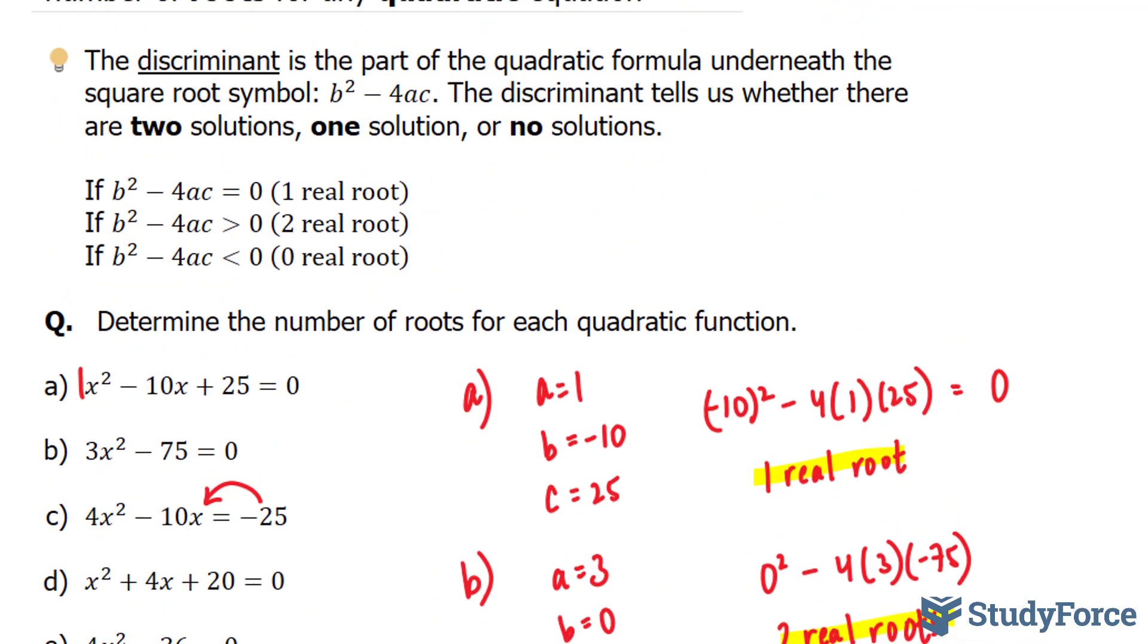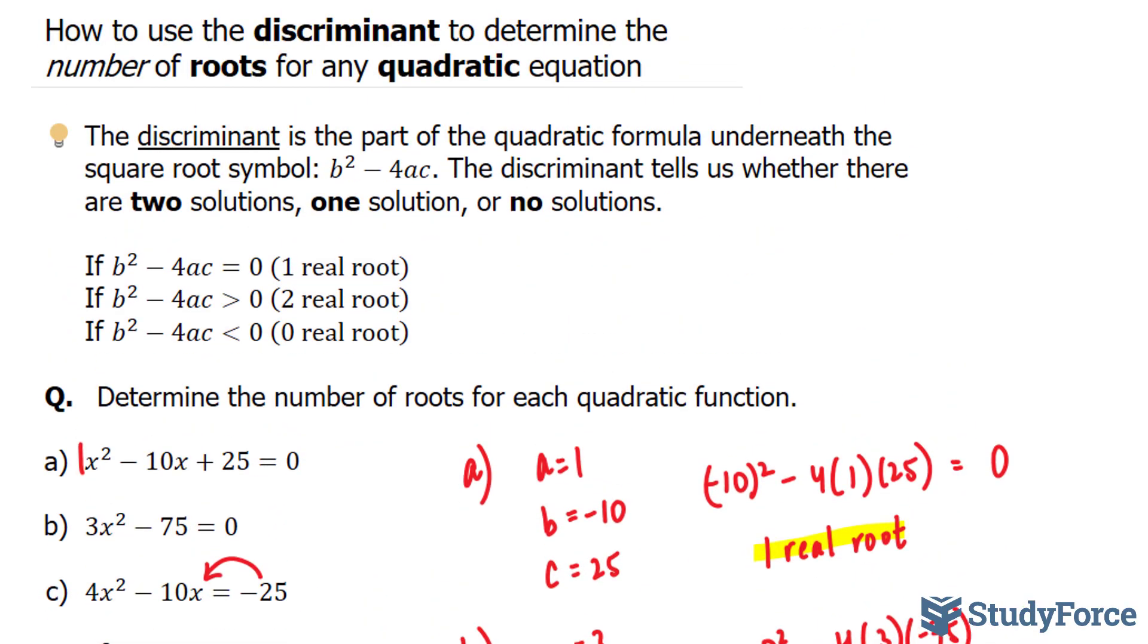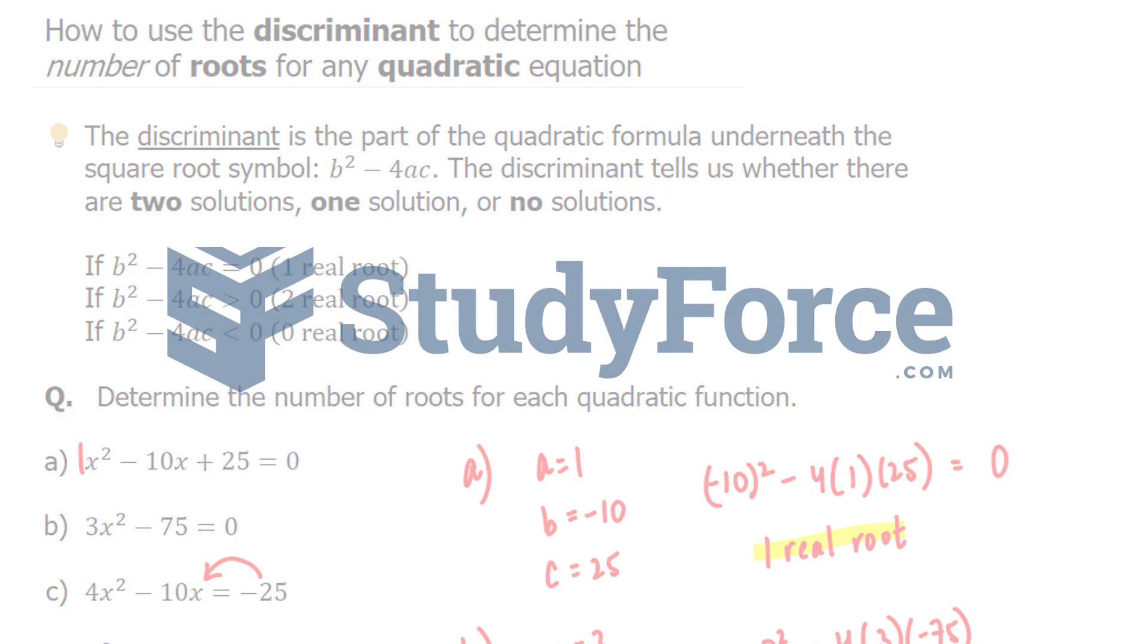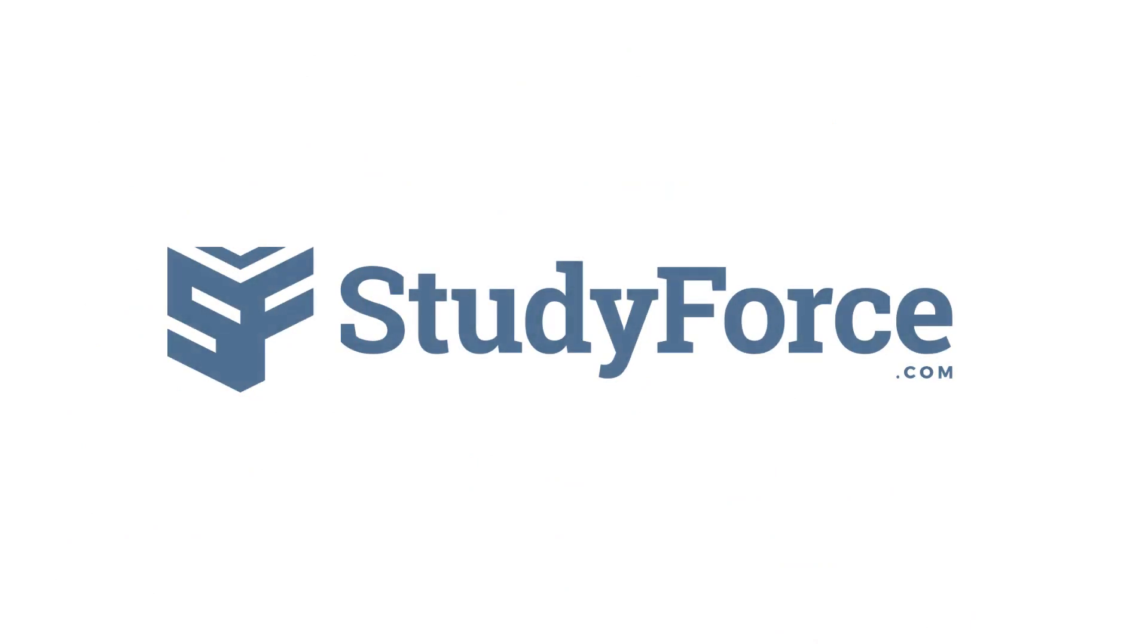And there you have it. That is how to use the discriminant to determine the number of roots for any quadratic equation. If you found this tutorial helpful, please support our channel by subscribing or by liking this video. If you have any further questions, visit our website at studyforce.com. We're an online service for students seeking free homework help. See you soon.